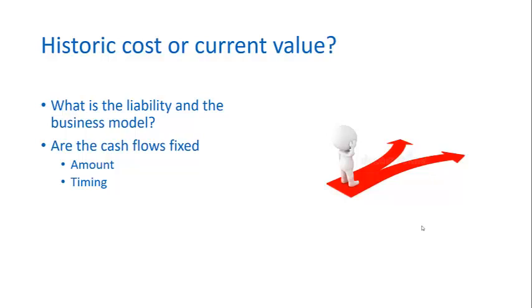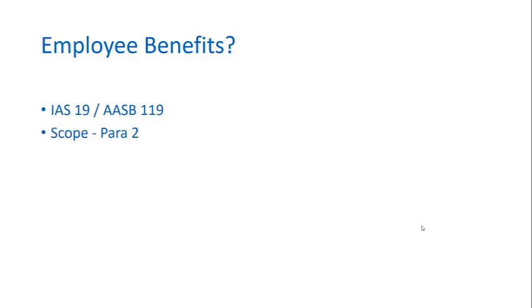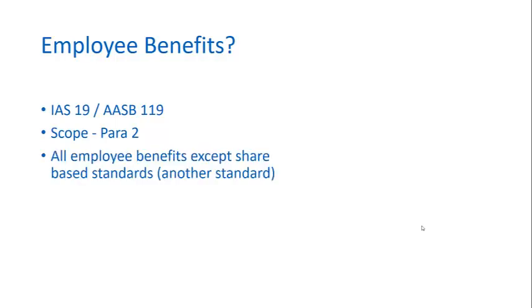In relation to the provisions related to employees, they're not fixed and they're uncertain as to timing, so just like with provisions, it's going to be a current value or a fair value type standard. The standard we're talking about now is IAS 19, AASB 119, and the scope of the standard is addressed in paragraph 2. It tells us that it applies to all employee benefits except for share-based payments, which are addressed in another standard.